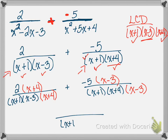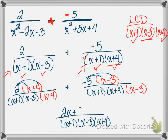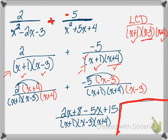The denominator is now covered and doesn't need to be multiplied out. I distribute the numerators: 2 times x plus 4 gives 2x plus 8; negative 5 times x minus 3 gives negative 5x plus 15. Combining: 2x and negative 5x gives negative 3x, and 8 plus 15 gives 23. Final answer: negative 3x plus 23 over x plus 1 times x minus 3 times x plus 4.